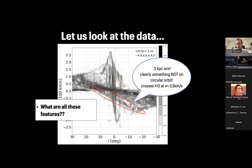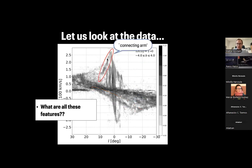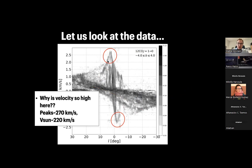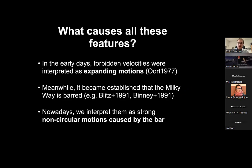There is also the feature called the 3 kiloparsec arm, which crosses l=0 at velocity minus 53 km/s — it cannot be on a circular orbit because for circular orbits l=0 means v=0. Then there is the connecting arm, and very high velocity peaks faster than the Sun's velocity around the galactic center. In the early days, these forbidden velocities were interpreted as expanding motions — maybe a big explosion in the galactic center. However, it became established that the Milky Way is a barred galaxy.